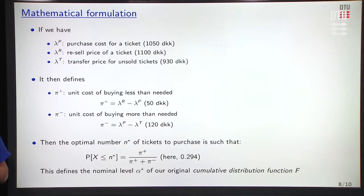Let's formulate that mathematically. We have here lambda p, that's the purchase cost for a ticket, 1050 kroner. Lambda r is the resale price of a ticket, 1100 kroner. Lambda t is what we're going to call the transfer price for an unsold ticket to our Rook pusher friend, 930 kroner. Then we're going to define penalties in terms of unit cost of buying less than what we need. So for any unit we could have sold, we're going to lose 50 kroner. Because if we had sold this unit, bought this unit, sorry, and then sold it afterwards, we would make this 50 kroner. So for any unit we don't buy and we could have sold afterwards, we lose 50 kroner. Similarly, the unit cost of buying a unit too many is 120 kroner. Because this unit too many, you will make a loss of 120 kroner when transferring it to your Rook pusher friend.